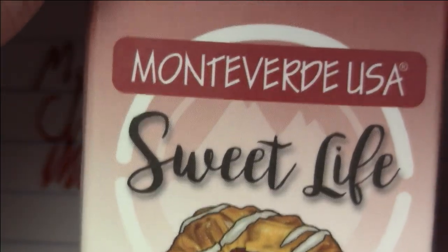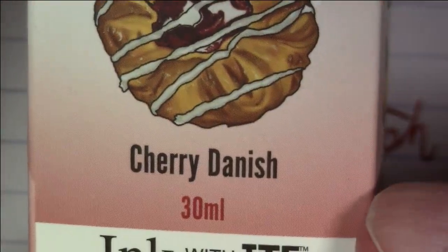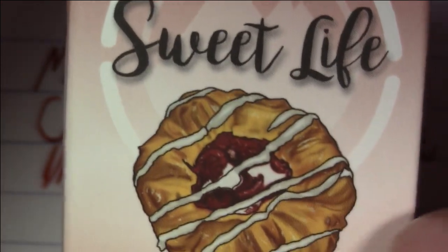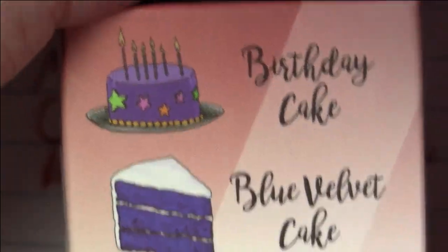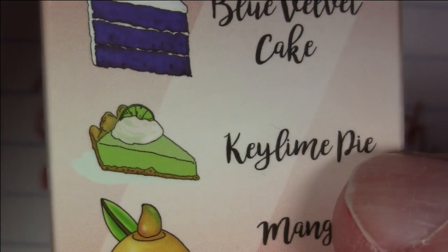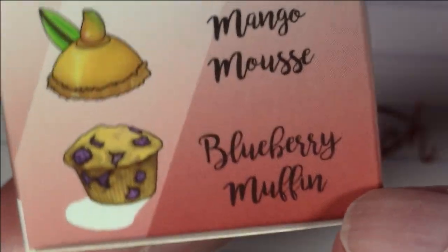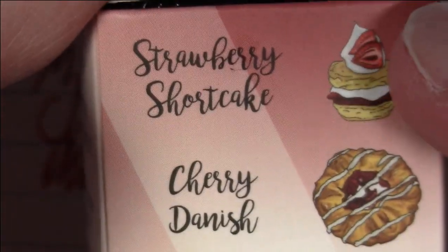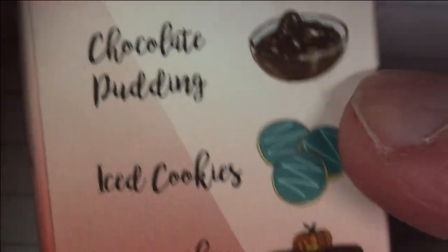This is a cherry red. I guess it's designed to look like cooked cherries and that's kind of exactly what it looks like. This is part of the Monteverde Sweet Life line, a line of ink from Monteverde after different pastries and desserts. So we can see on the side of the box here they have birthday cake, blue velvet cake, key lime pie, mango mousse, blueberry muffin, strawberry shortcake, cherry danish which is this one, chocolate pudding, iced cookies, and pumpkin cake.